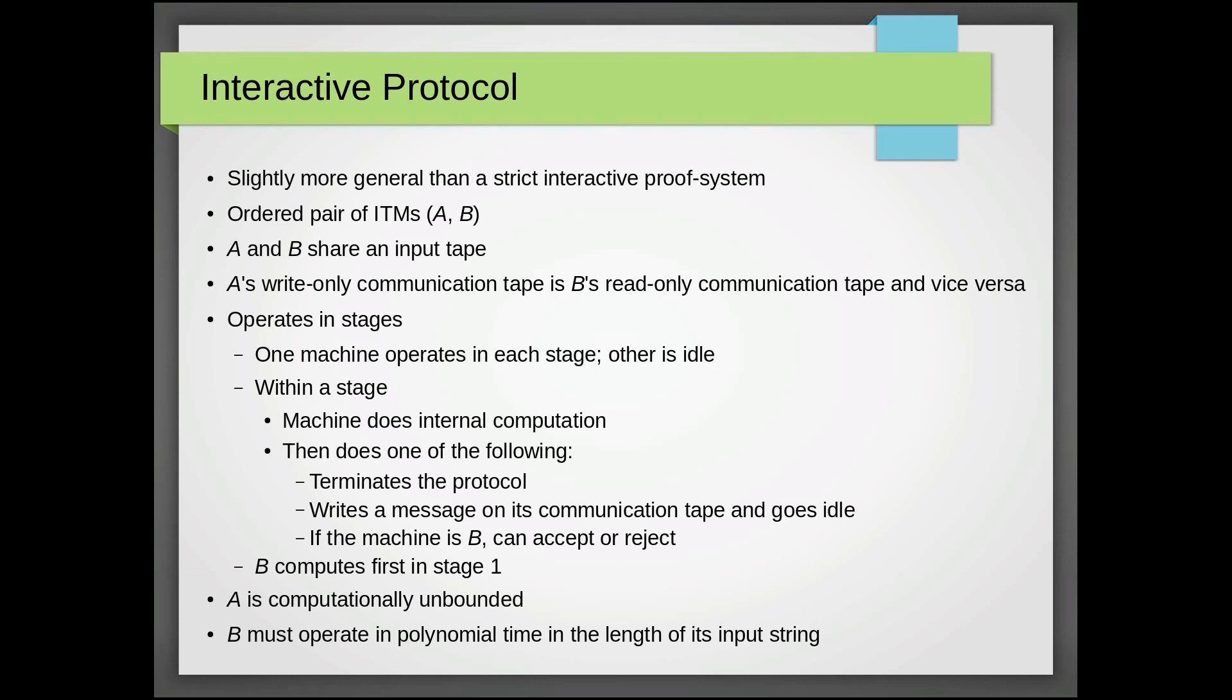The second thing it can do is write on the communication tape, giving a message for the other machine, go idle, and then let the other machine continue its computation. Finally, if the machine is B and only B, like a standard Turing machine, it can accept or reject the input string as a member of the language.